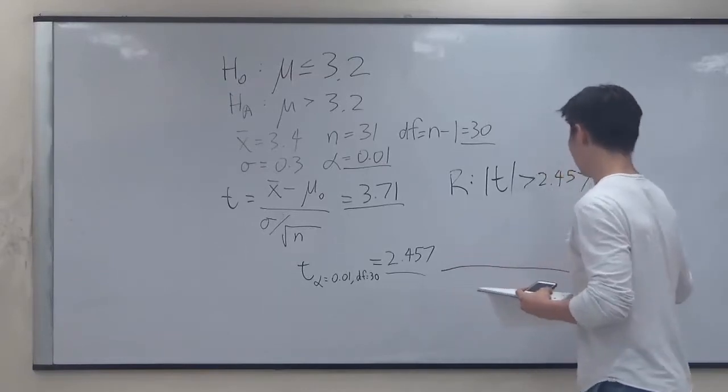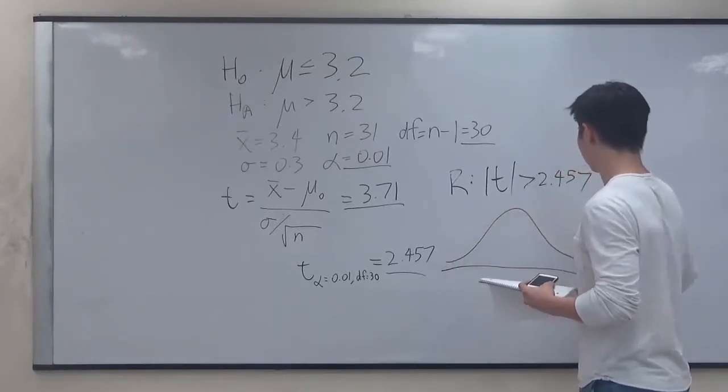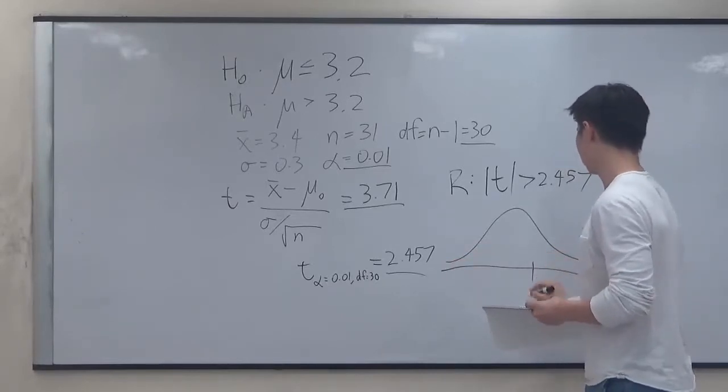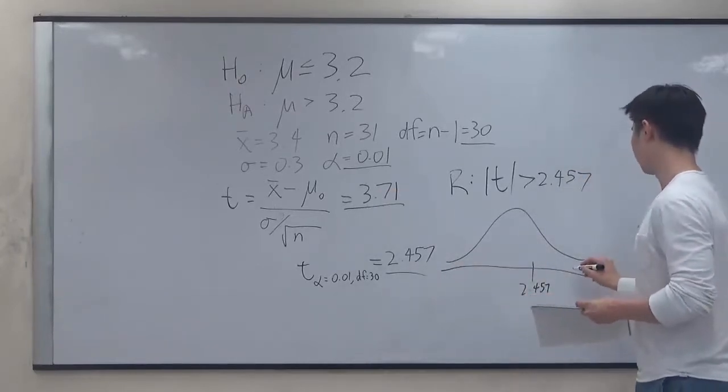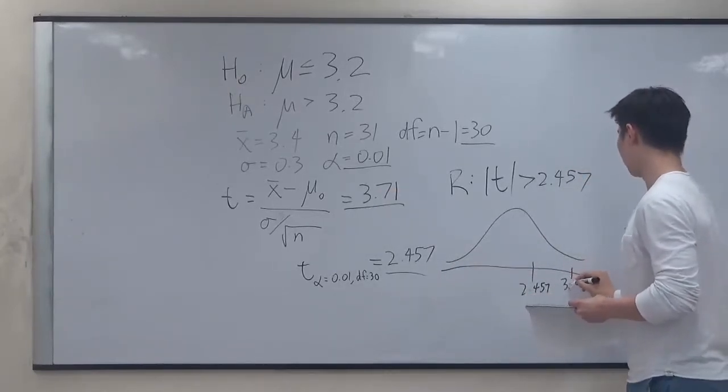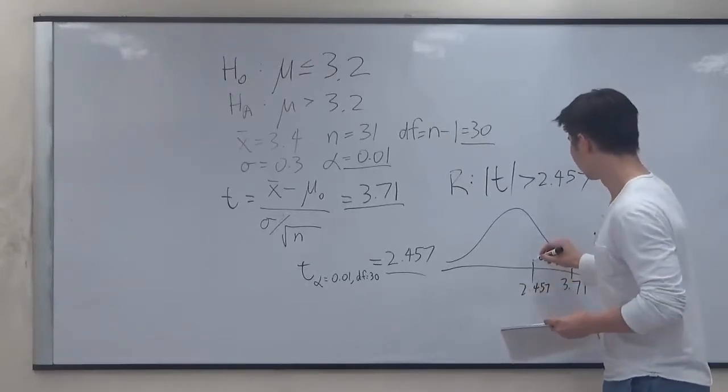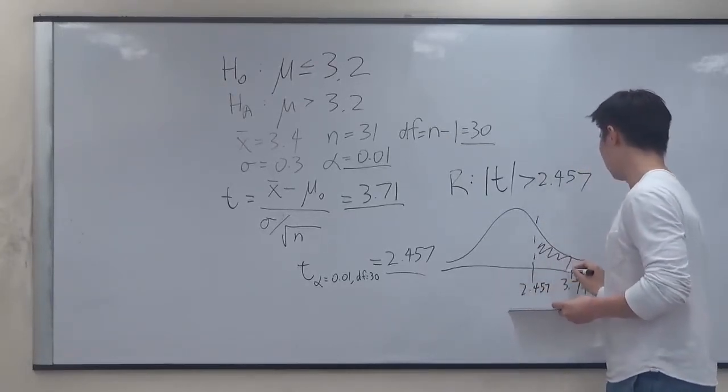Now, just as a visual, I can sketch out the normal distribution and we see that our rejection criteria is 2.457 and our calculated value is 3.71. And this is a one-sided t-test.